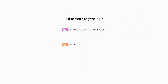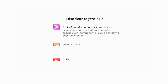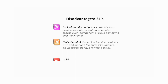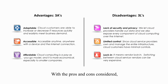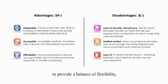I use three L's to summarize the disadvantages of cloud computing: Lack of security and privacy, Limited control, and Lock-in. Lack of security and privacy — we let cloud providers handle our data, and we expose every component of cloud computing over the internet. Limited control — since cloud service providers own and manage the entire infrastructure, cloud customers have minimal control. Lock-in — by lock-in I mean vendor lock-in; switching between cloud service vendors can be very expensive. With the pros and cons considered, we can expect cloud computing to be a combination of different service models to provide a balance of flexibility, scalability, security, and control.